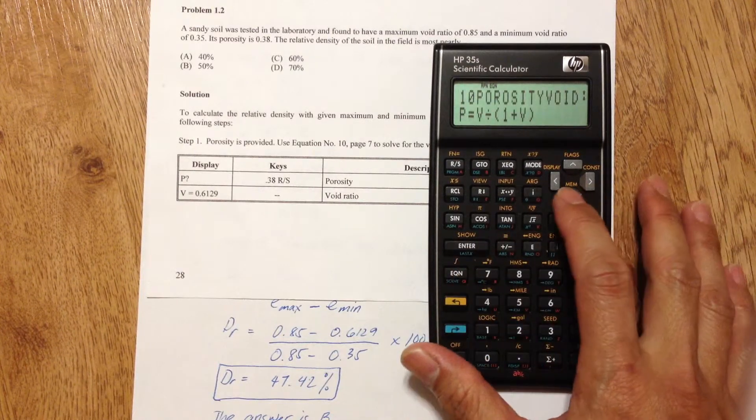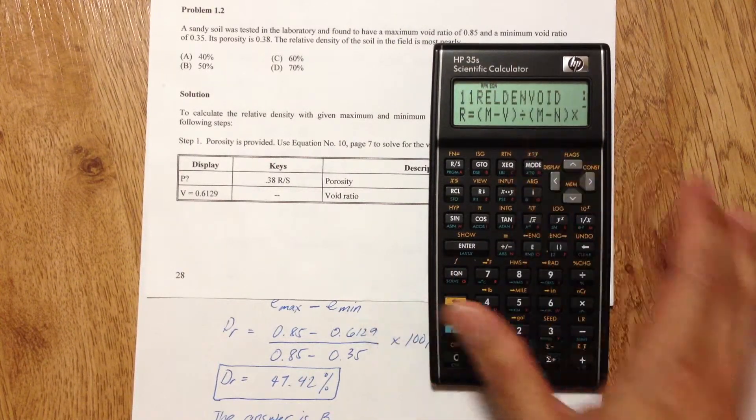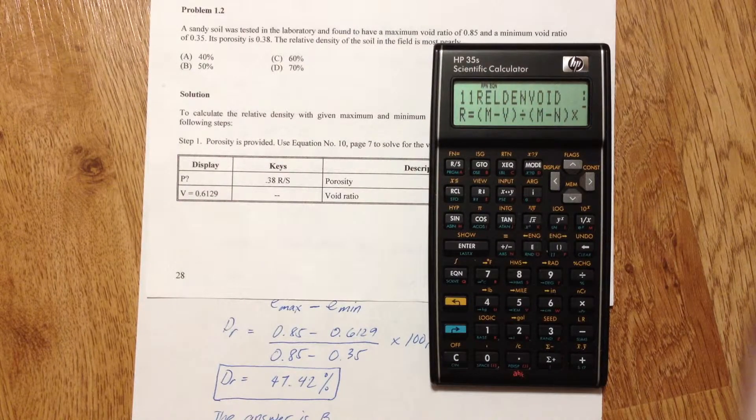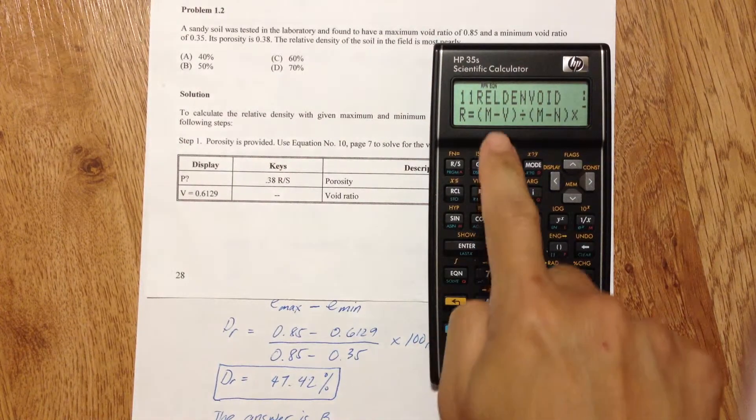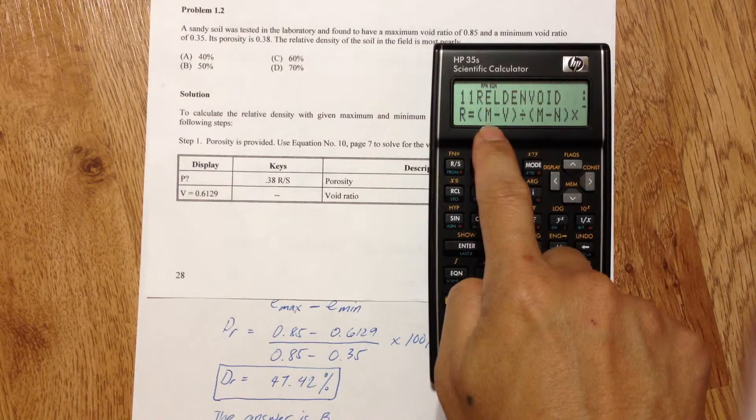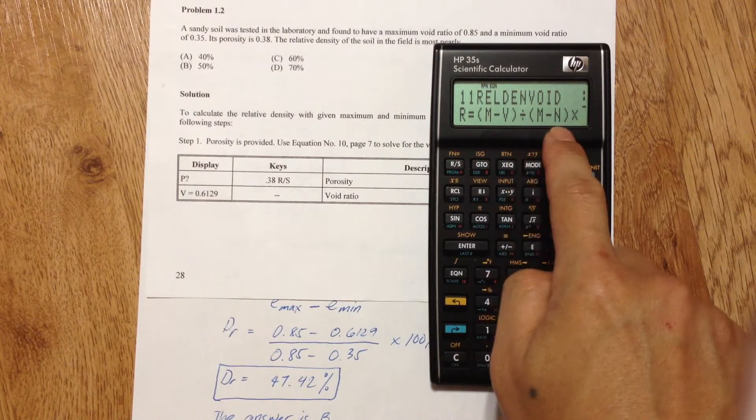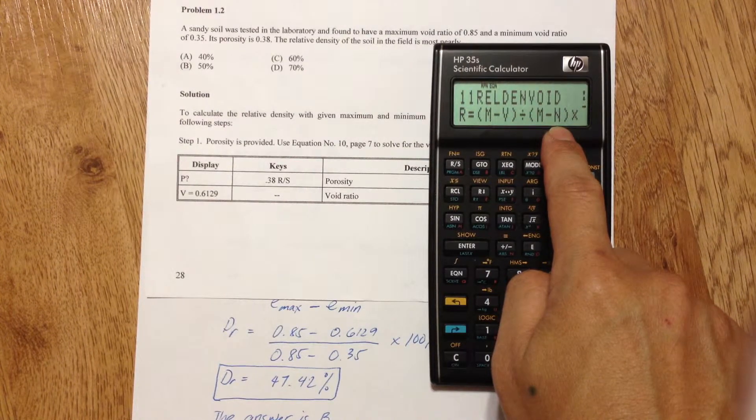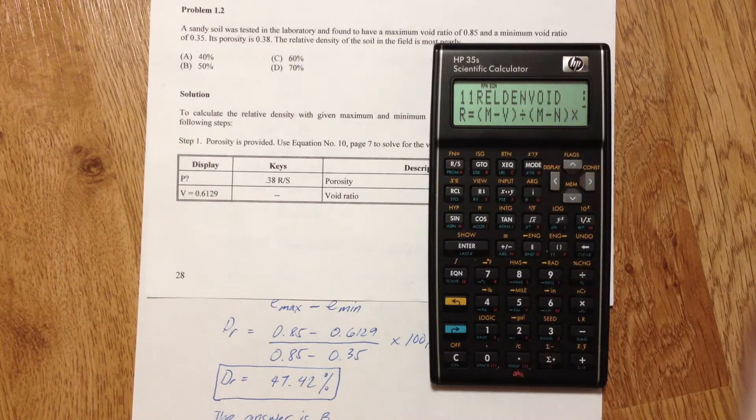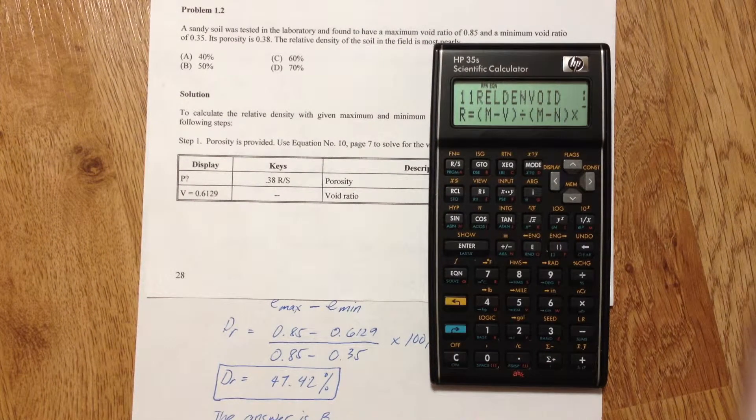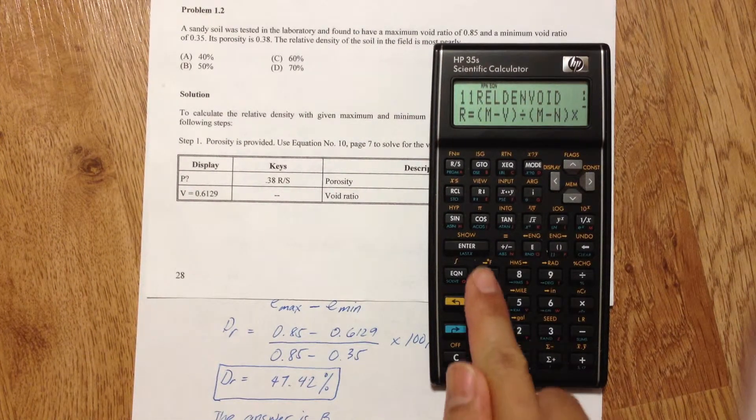And now we can use equation number 11 to calculate the relative density given maximum void ratio for M, void ratio for V and the minimum void ratio for N. And R is the relative density. So press enter.